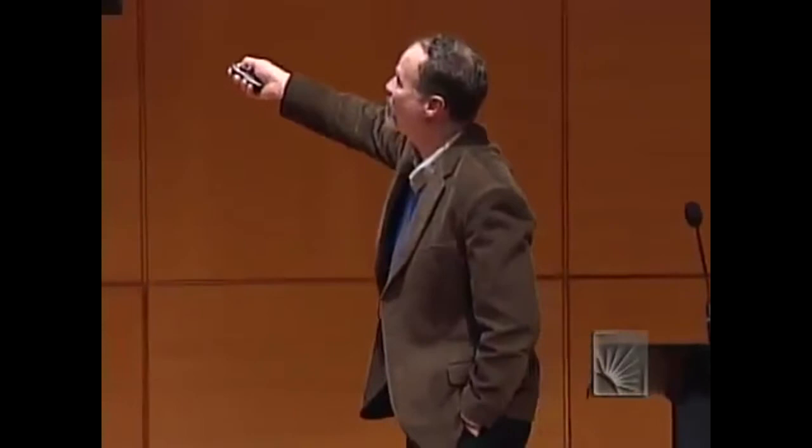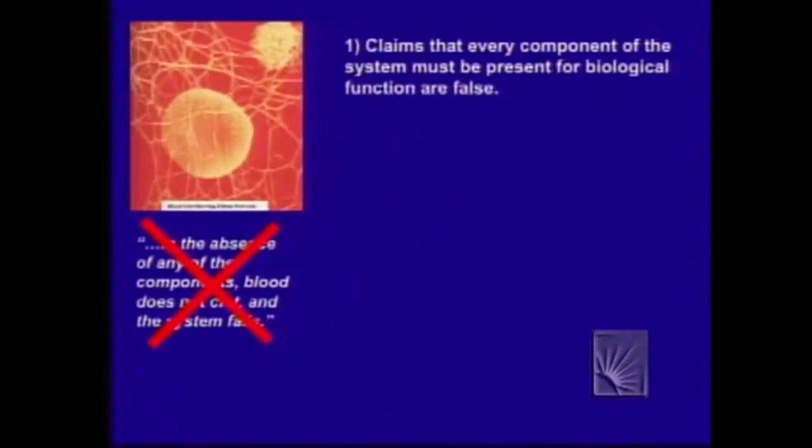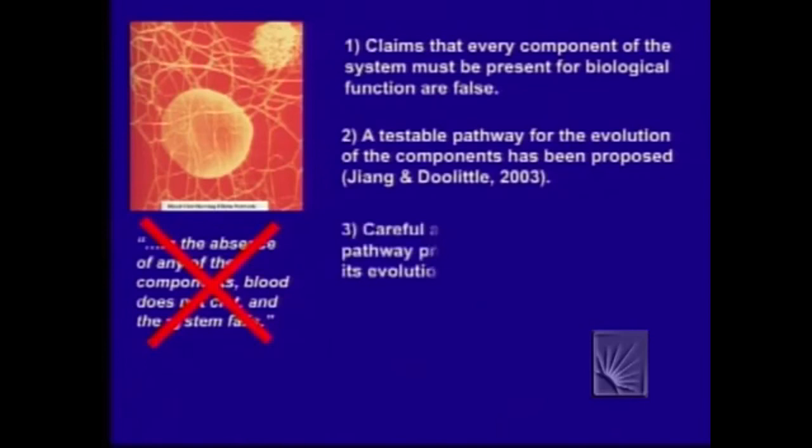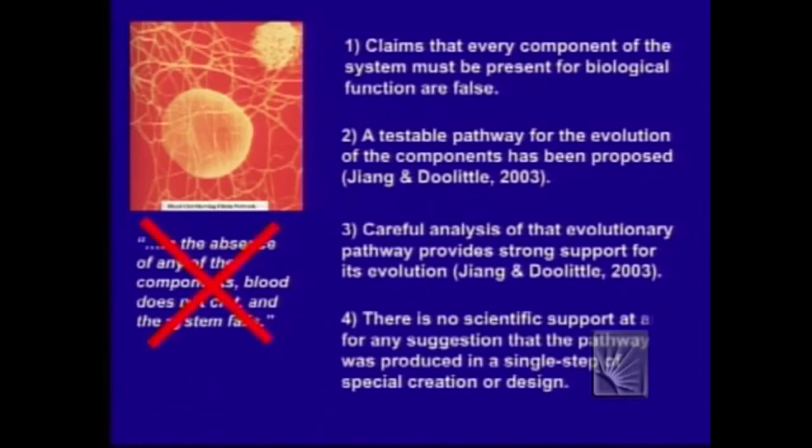Doolittle has worked out an evolutionary scheme for how all of the clotting factors evolved from a single set of components that existed before blood clotting evolved. That leads to an evolutionary prediction: the proteins should have very specific relationships to each other. When you search the genomes of a host of organisms, it does exactly that — the relationships match. So with respect to blood clotting: claims that you need every component present for biological function are false; a testable pathway has been proposed; careful analysis shows it fits the evolutionary prediction; and there is absolutely no scientific support for any suggestion that the pathway was produced in a single step of creation or design. That's what I mean by the collapse of intelligent design as a scientific theory.